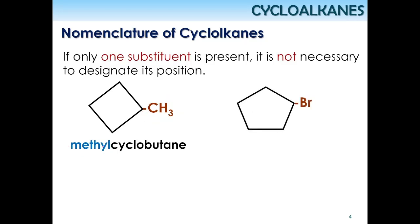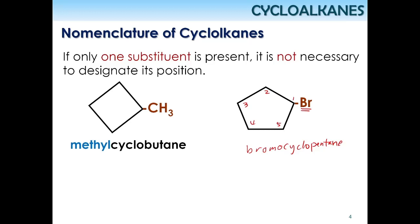The same applies for a bromine substituent. The parent chain here is cyclopentane because there are five carbons. Br as a substituent is named 'bromo'. There should be no space between the substituent and the parent name — it is bromocyclopentane. No need to write '1-bromocyclopentane' since there is only one substituent.